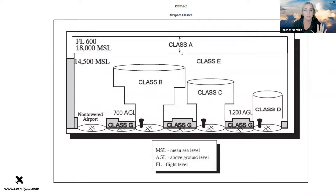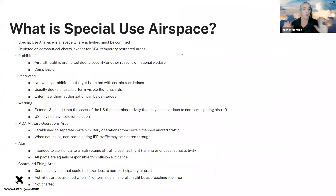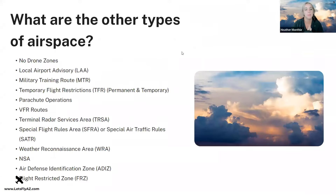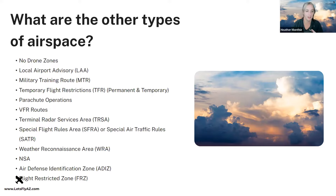Special use airspace includes prohibited areas, restricted areas, warning areas, MOAs, alert areas, and controlled firing areas — though controlled firing areas are not shown on sectional charts. There are also no-drone zones, local airport advisories, military training routes, TFRs (both permanent and temporary), parachute operations, VFR routes, TERSAs, SFRAs, special air traffic rules, weather reconnaissance areas, national security areas, ADIZs, and the freeze around Washington D.C.